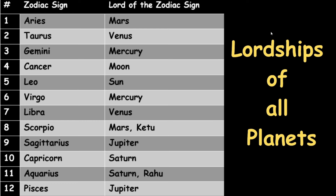What do you mean by the lord of the house in Vedic astrology? Each planet has got a responsibility of handling either one or two houses, so this planet becomes the lord of those houses. For example, Mars is the lord of two zodiac signs which is Aries and Scorpio, and Venus is the lord of two zodiac signs, Taurus and Libra.